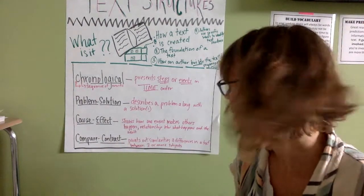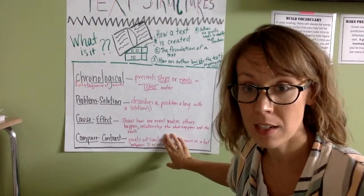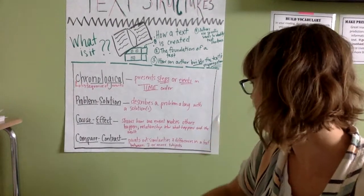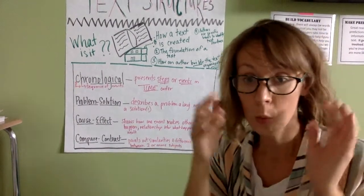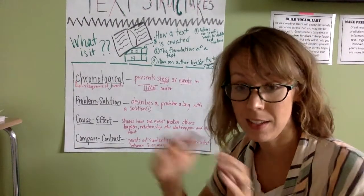Next, you have cause and effect, showing how one event makes others happen in relationships between what happens as a result. So one thing causes this, and then there's effect to that.